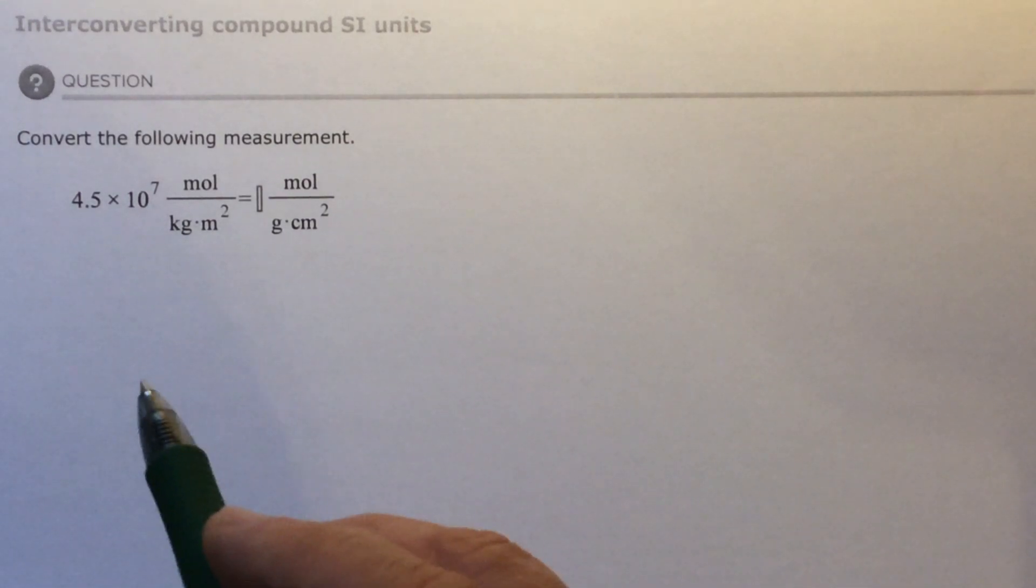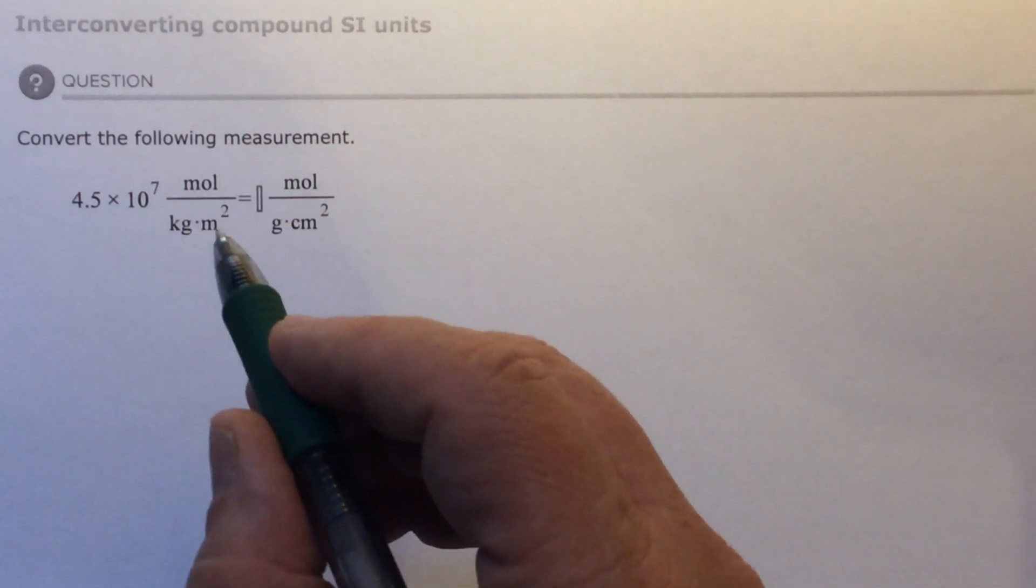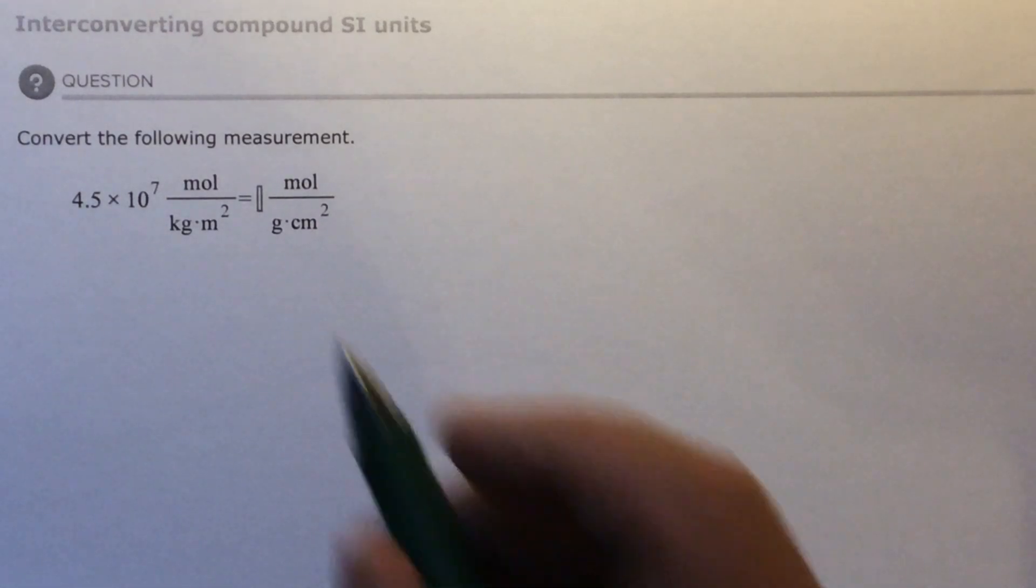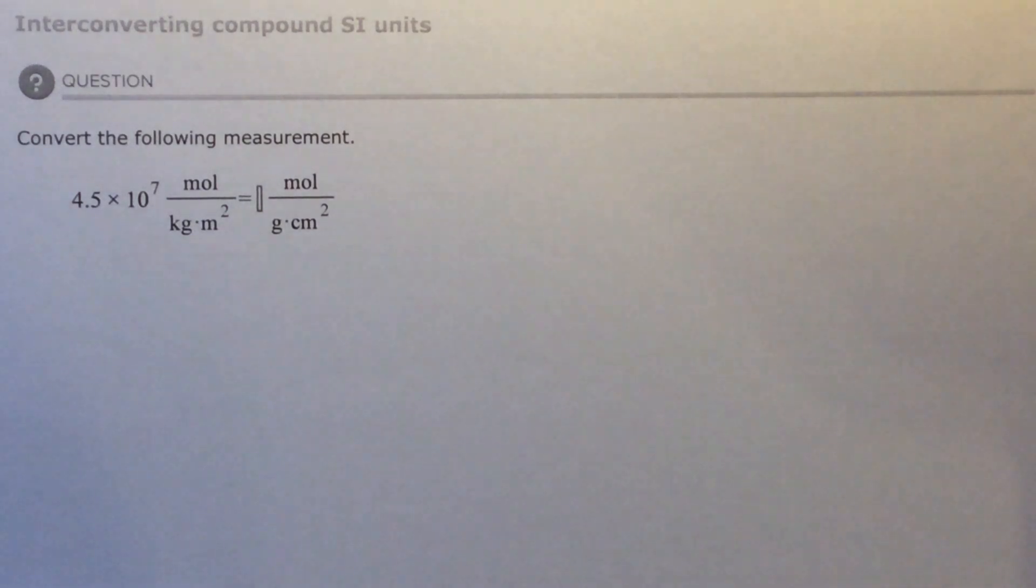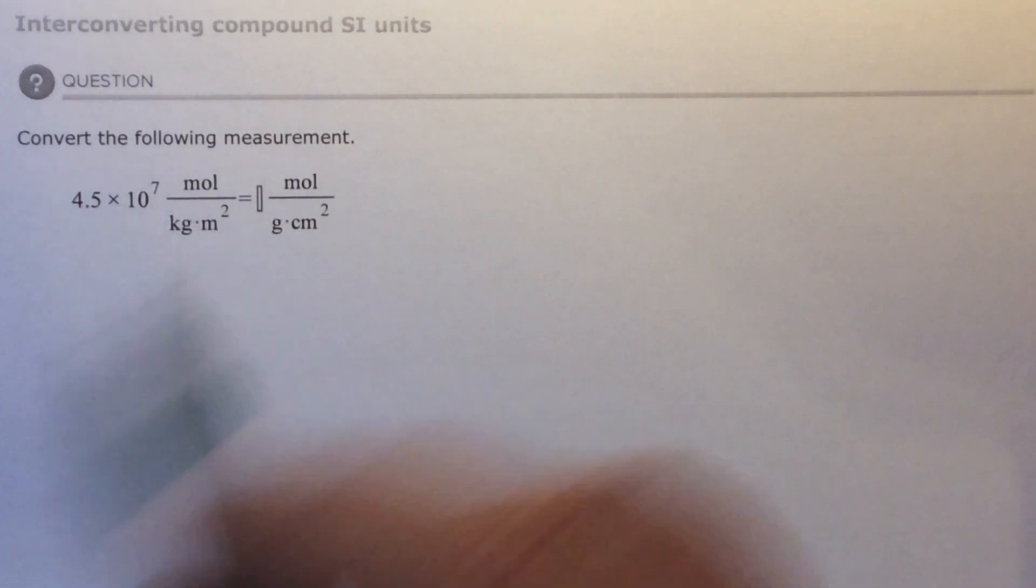I've got 4.5 times 10 to the 7, so I have some amount of moles over kilogram meter squared. I've got a math problem here. I've got moles divided by kilograms, also divided by meters times meters. So I've got moles over kilograms times meters times meters.